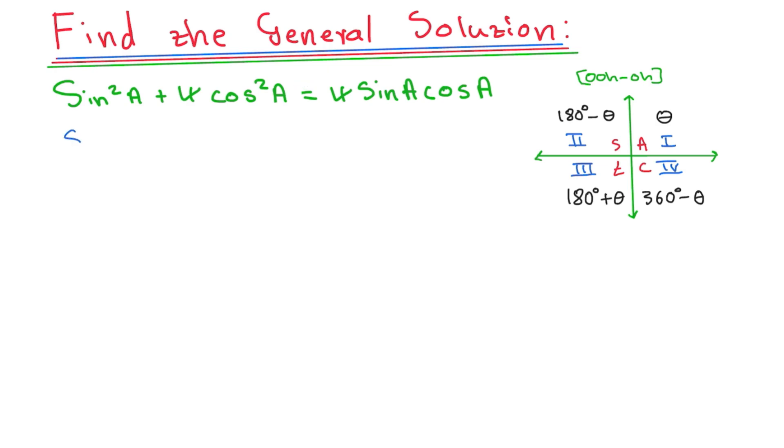I'm going to say sin squared A plus 4 cos squared A, then I'll say minus 4 sin A cos A, and then I'll say equals to 0. So this looks like x squared plus 4, and cos will be y. So let's say y squared minus 4xy equals to 0. The minute you have an algebraic equation like this, we will need this y to be here. And then you'll factorize.